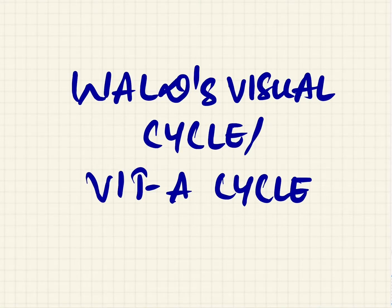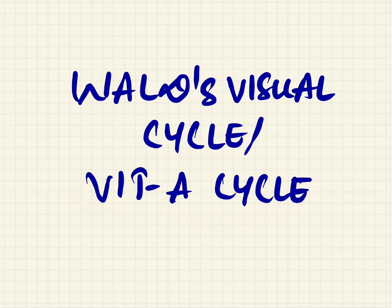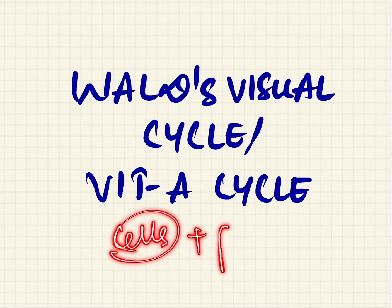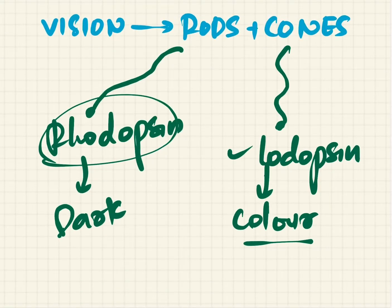In this video we'll be talking about the visual cycle, also called the vitamin A cycle. This will explain the cyclical events that occur in the process of vision. Before going into this vitamin A cycle, you should be familiar with the cells that are causing vision and the pigments present in them.